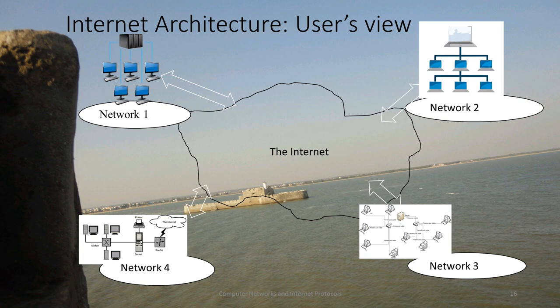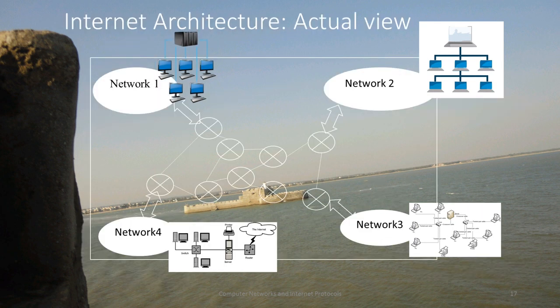When you look at the internet from the normal user's view, it is like what is shown on the screen. We have different networks and we assume that they are all connected to the internet — the internet is some form of a cloud which connects all these networks. In fact, the correct way to look at the internet from a technical perspective is that these networks are connected to each other by routers, shown here as a circle containing a cross.